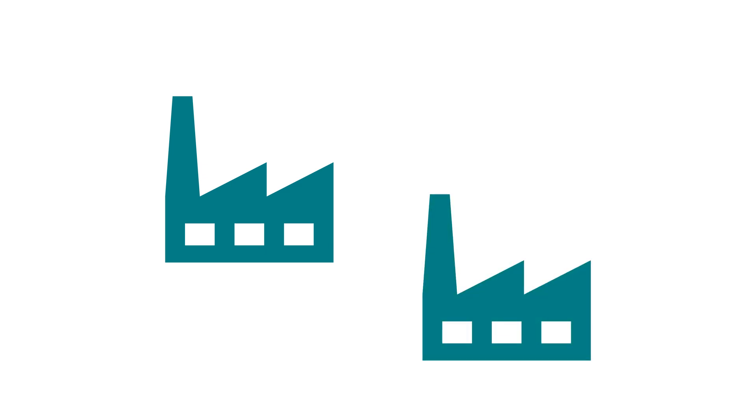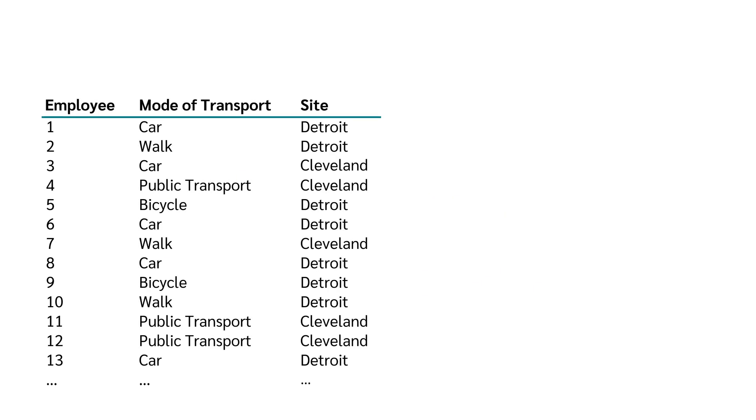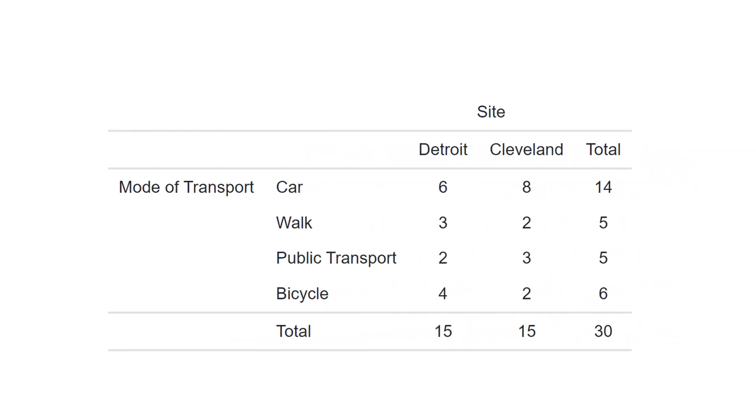Imagine the company doesn't have one factory, but two. One in Detroit and one in Cleveland. So we also ask the employees at which location they work. If we want to display both variables, we can use a contingency table.